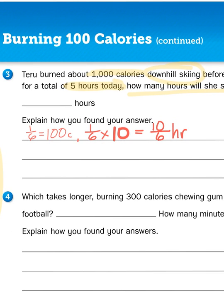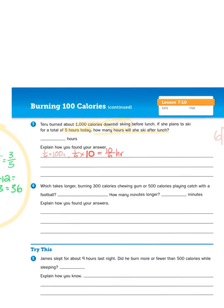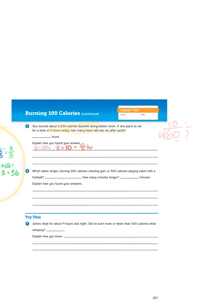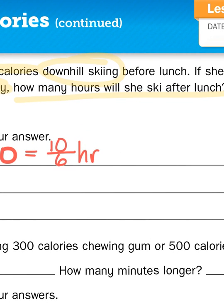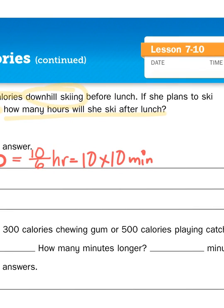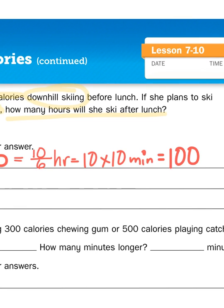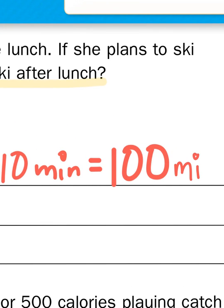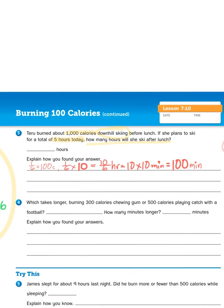Now how much time is that? Well, if we know that there are 10 minutes for every sixth of an hour and there are 10 of them, it's basically 10 times 10 minutes. So each of my sixths, there's 10 sixths, I'm going to multiply that by 10 minute groupings so that's 100 minutes. So that's the amount of time that Tarou spent skiing before lunch.